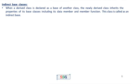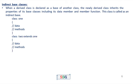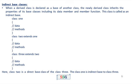For the indirect base class: when a derived class is declared as a base of another class, the newly derived class inherits the properties of its base class, including its data members and member functions — this class is called an indirect base. For example, class one contains data and methods; class two extends one; class three extends two. Here class two is a direct base of class three, and class one is an indirect base to class three.